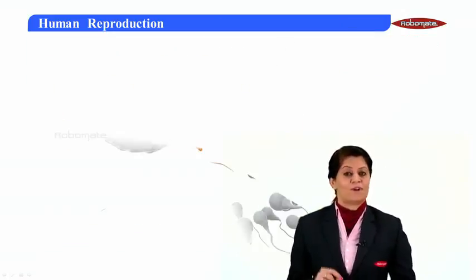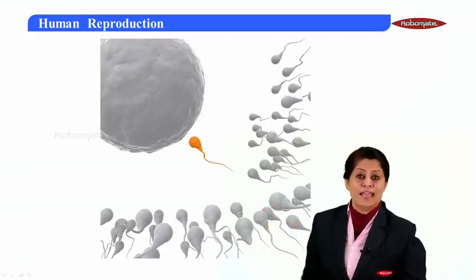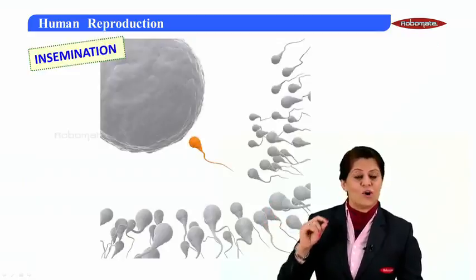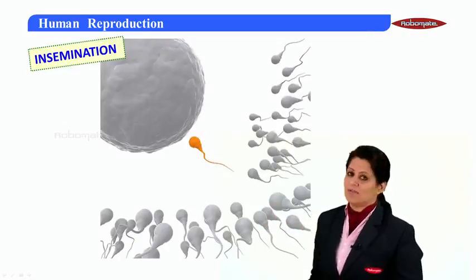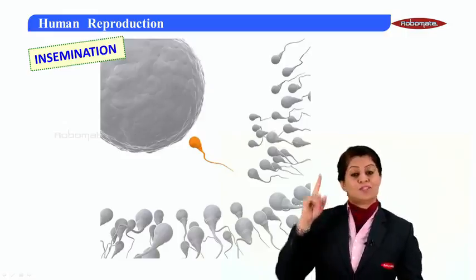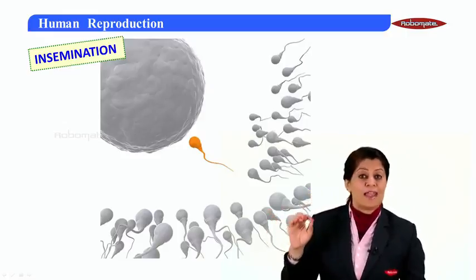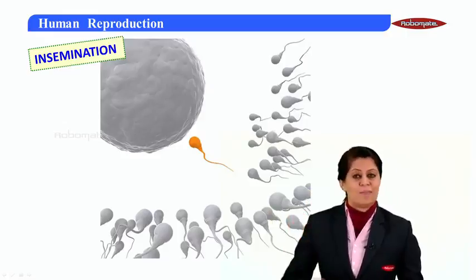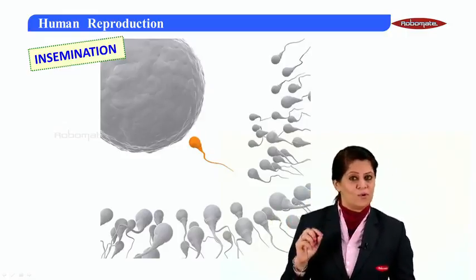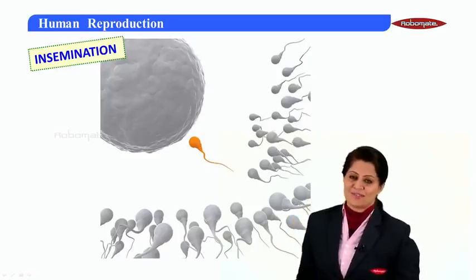When we talk about fertilization, millions of sperms are released during insemination — that is the release of semen in the vagina of the female. Around 300 million sperms are released, but only very few are capable of getting close to the egg, and from those few, only one gets to fertilize.